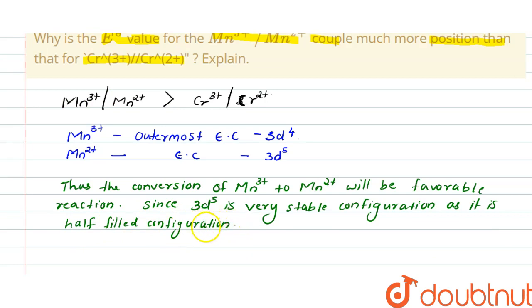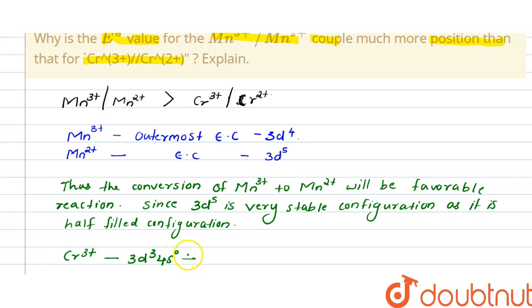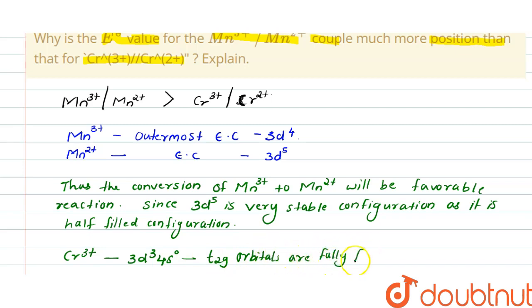In the case of Cr³⁺, the outer electronic configuration is 3d³ and 4s⁰. Here the t2g orbitals are fully filled, and hence Cr³⁺ is more stable.